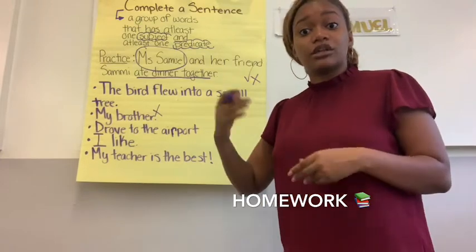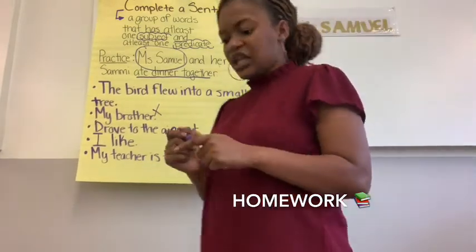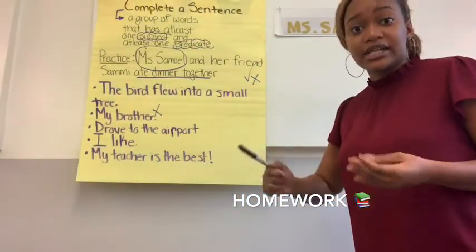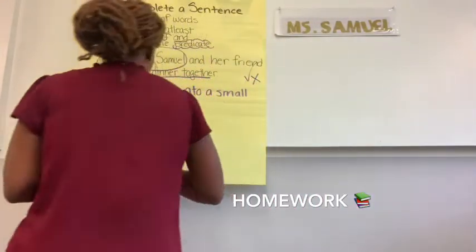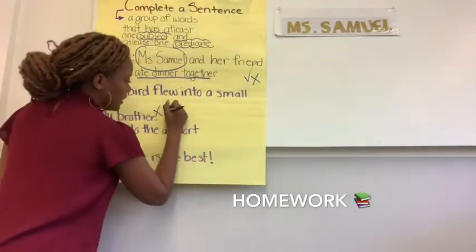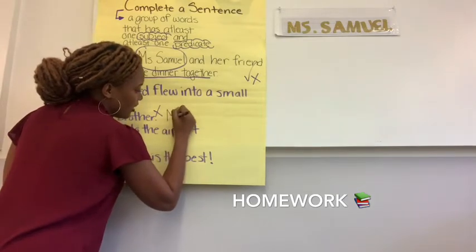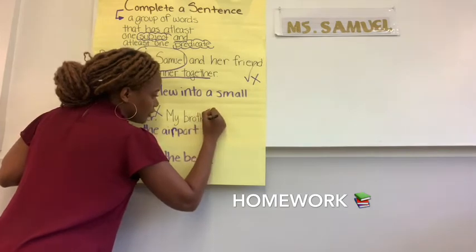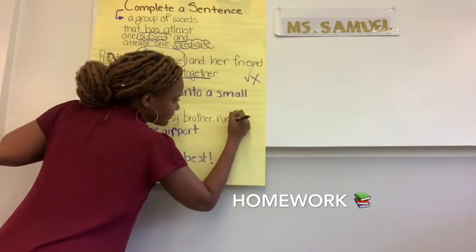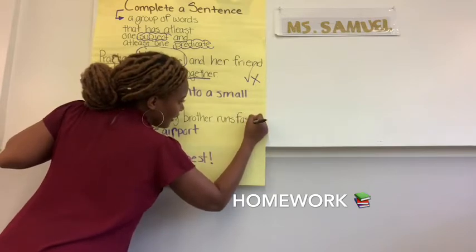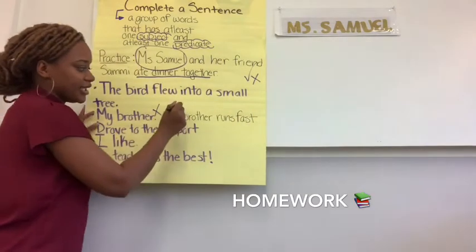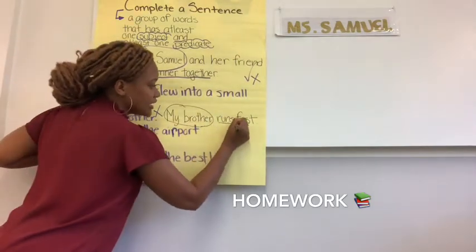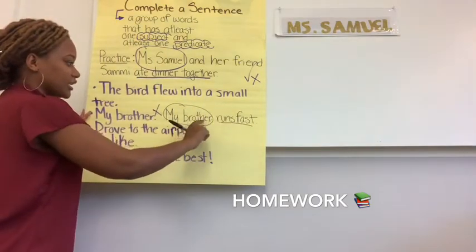Next, that means I'm going to rewrite it. How can I rewrite this sentence? I'm going to get a different marker so we can see. I know that it's not a complete sentence — it just says my brother. So I'm going to take my marker or pencil, whatever you have, and I might write: my brother runs fast. Now I know that I have my subject — my brother is still there — and I have my predicate, runs fast, which is telling me what the subject is doing.